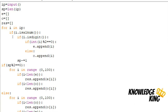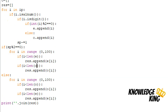If the digit is even, I append it to the even list; if odd, I append it to the odd list. For each non-special character, I remove one from the length count so that after the loop, what remains gives us the special character length. If the special character length is even, we print even first then odd; if odd, we print odd first then even. These results are stored in the result list and printed.